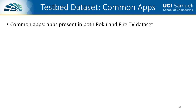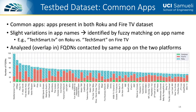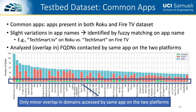In order to understand how platforms differ in terms of communication patterns of each individual app, we compared the set of domains contacted by apps present in both the Roku and Fire TV datasets — which we refer to as common apps. Since app names differ slightly across platforms, we identified common apps by performing fuzzy matching on the app names; for example, the TechSmart app is called TechSmart.TV on Roku but just TechSmart on Fire TV. Here we show data for the top 60 common apps in terms of number of domains contacted. Blue and red indicate domains unique to the Roku and Fire TV versions respectively, and green indicates domains accessed by both versions. We notice that common apps share very few domains, once again suggesting substantial differences between the ATS ecosystems of the two Smart TV platforms.